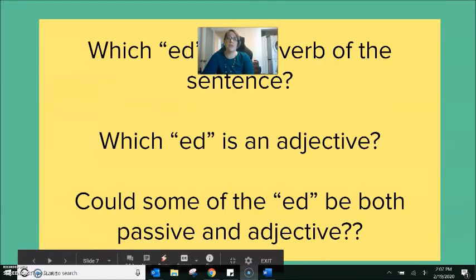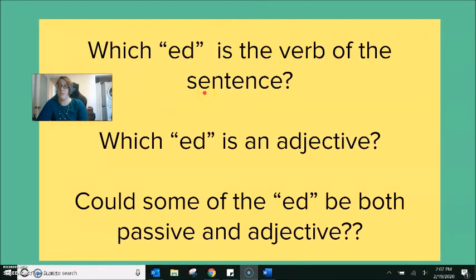Okay, so I do have a short quiz for you. I would absolutely love to see some answers for you in the comments underneath of the video. You don't have to answer for all of these verbs. But I want to read to you a short passage and try to identify which -ED is the verb of a sentence. Which -ED looks more like an adjective of a sentence. Remember that that adjective would be connected to describing some noun next to it. And do you think that some of the -ED could be both a passive or an adjective?